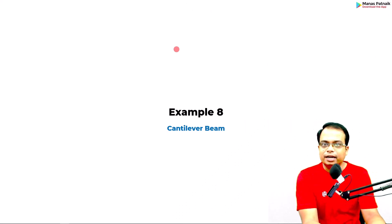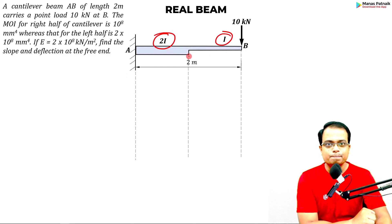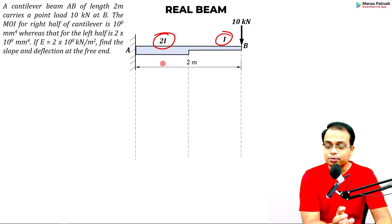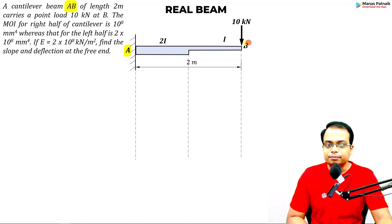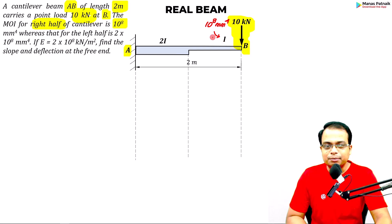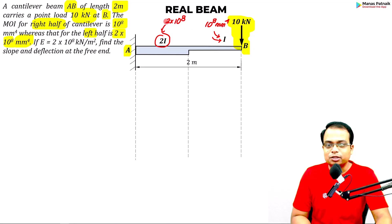This is going to be the last problem on cantilever beams — it is slightly advanced. The area moment of inertia for the right half is 10 to the power 8, represented as I, whereas for the left half it is 2 into 10 to the power 8, or 2I. The diagram has not been given, but we can read and understand the problem.